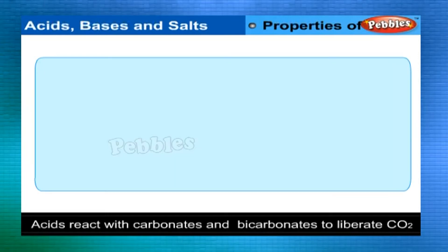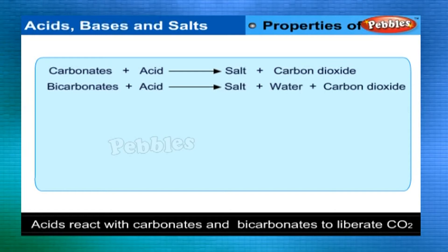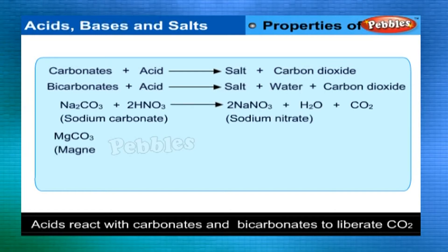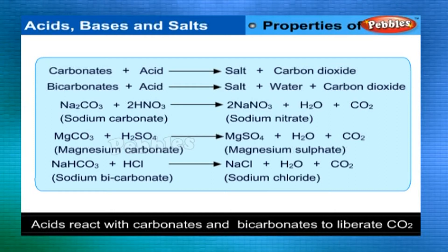Acids react with carbonates and bicarbonates to liberate carbon dioxide. Carbonates plus acid gives salt plus carbon dioxide. Bicarbonates plus acid gives salt plus water plus carbon dioxide. Other acids reacting with carbonates and bicarbonates show similar reactions. The products of such reactions are the salt of the acid, water and carbon dioxide.